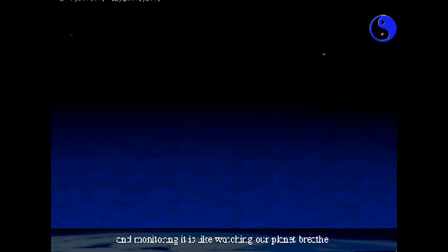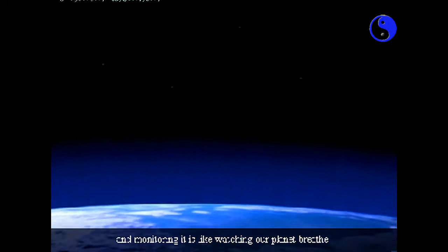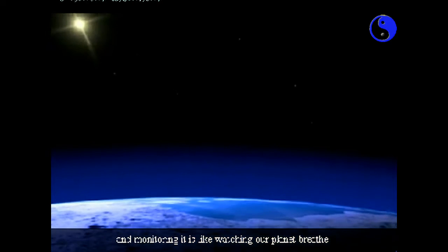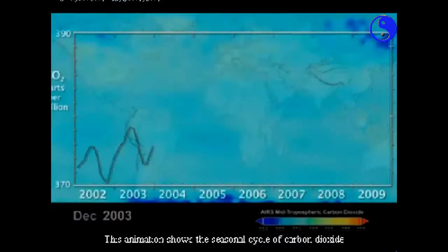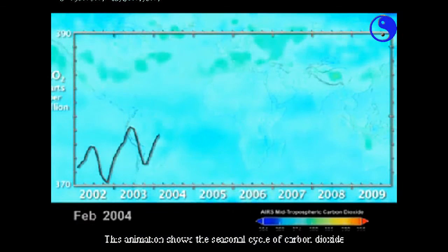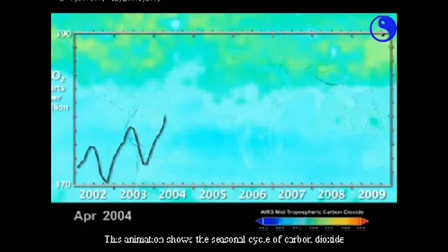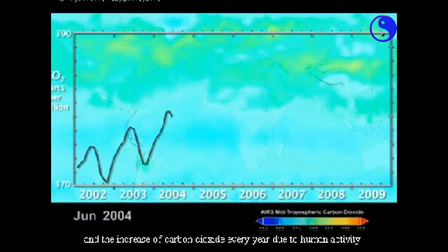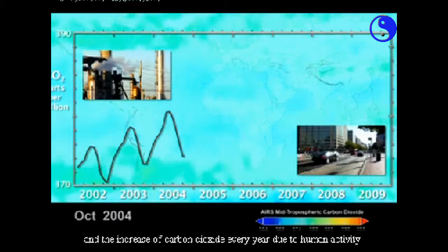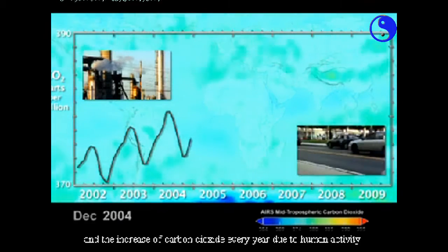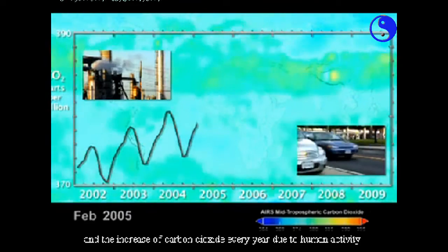Carbon dioxide is a naturally occurring gas in our atmosphere and monitoring it is like watching our planet breathe. This animation shows the seasonal cycle of carbon dioxide and the increase of carbon dioxide every year due to human activity.